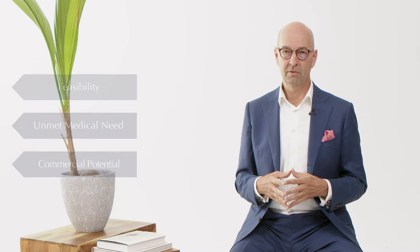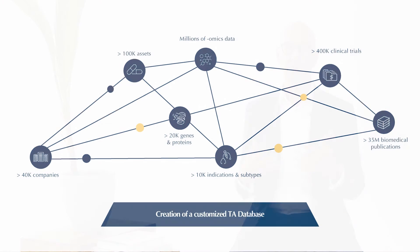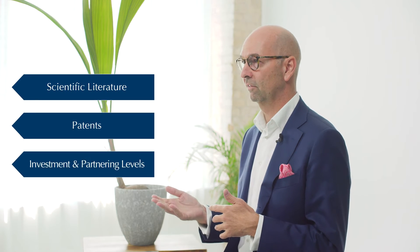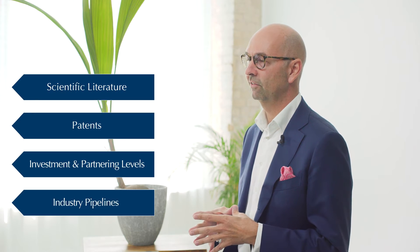Once this is defined, the next step is the creation of a customized therapeutic area database to establish the option space. Our data scientists and consultants have combined and curated state-of-the-art databases covering scientific literature, patents, investments, partnering levels, as well as industry pipelines covering some 10,000 indications and disease terms — both orphan and non-orphan. Catanion's indication database is called INDICAT and it contains more than 3,000 indications with any R&D pipeline activities.